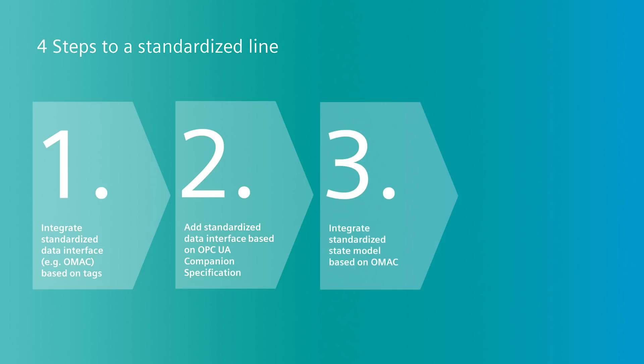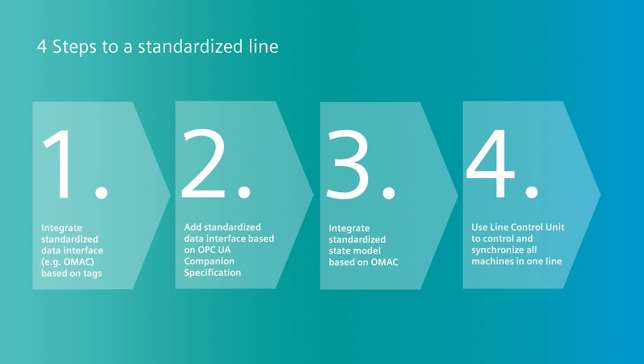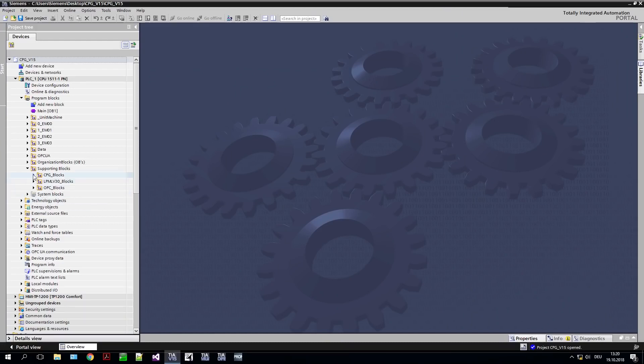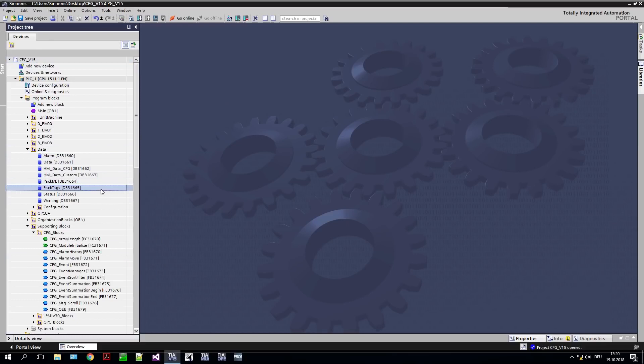Once the data interface is standardized and implemented, I'll show you how the behavior of a machine can be standardized using standardized status models in the next step. These standardized data interfaces are created and maintained by industry associations such as the OMAC Foundation. Industry associations like this make specifications available which define how a data interface must be constructed, such as for the very well-known OMAC PACML standard. A TIA Portal library containing all the function and data modules required for integrating this interface into a SIMATIC S7-1500 is available to you free of charge.